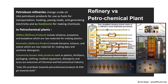These are used to make plastics, dyes, and detergents — just as examples. Commonly used products such as plastic, fertilizer, packaging, clothing, medical equipment, detergents, and tires are outcomes of the chemical and petrochemical industry. So the major difference is: in a refinery we process crude oil, and the outputs become raw materials for petrochemical plants, where plastics, fertilizers, packaging, clothing, and medical equipment are obtained.